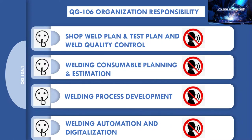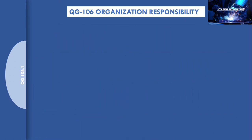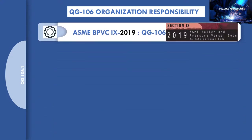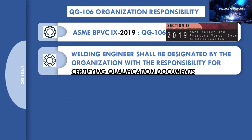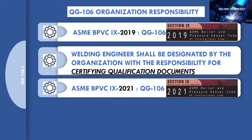Let's see what ASME Section 9 talks about regarding welding engineer responsibility. The 2019 edition of Section 9 added a requirement to paragraph QG-106 that organizations must define the responsibilities of the welding engineer. The main responsibility was given for certifying qualification documents, meaning that involvement of the welding engineer during qualification testing was not mandatory, but qualification documents should only be certified by the designated welding engineer.